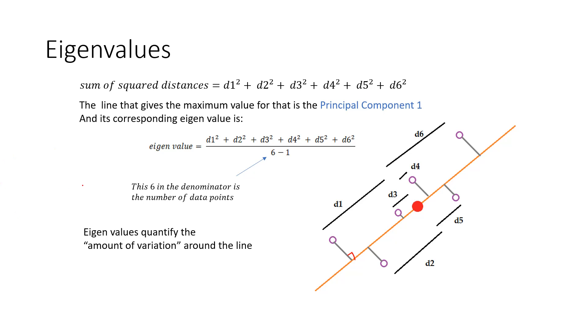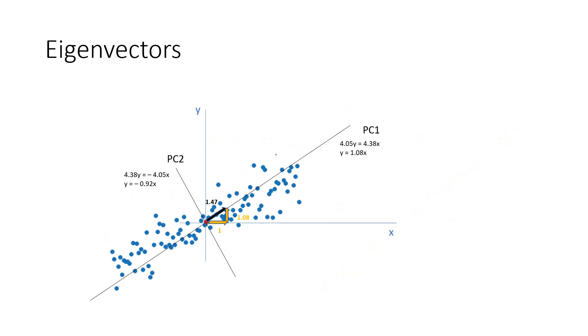Now, how do we find the eigenvectors? Once we have found out the line that maximizes the variation around the central point, around the mean, we find out the equation of that line. In a 2D space, the equation of the line is 4.05y is equal to 4.38x. In simplified manner, it is y is equal to 1.08x. What it means is that if you travel one unit in the x direction, then we are traveling 1.08 in the y direction.